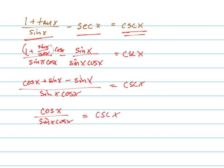Now what's going to happen? The cosines cancel. So I have 1 over sine x equals cosecant x. Which means cosecant x equals cosecant x. Thank you.